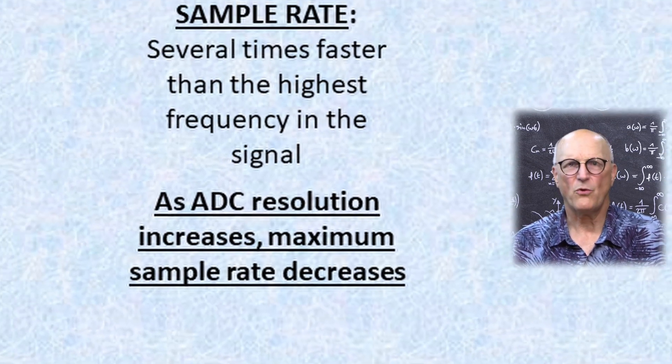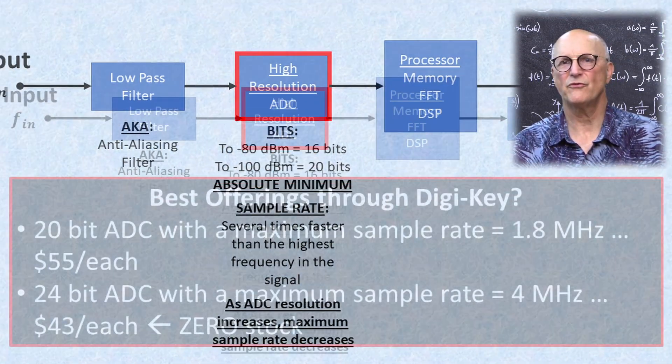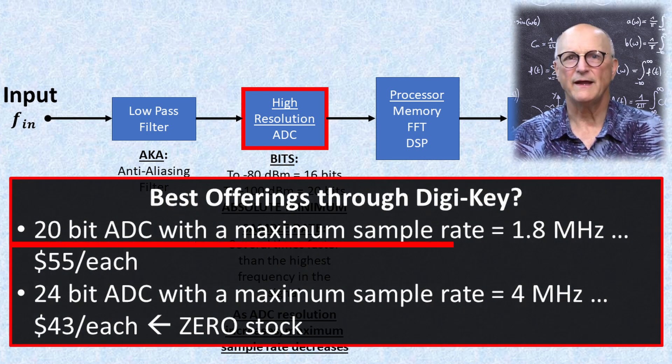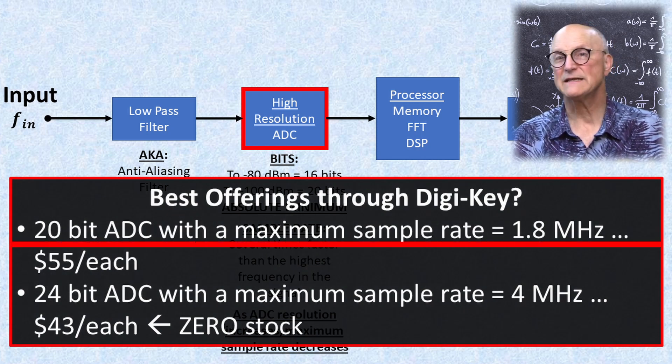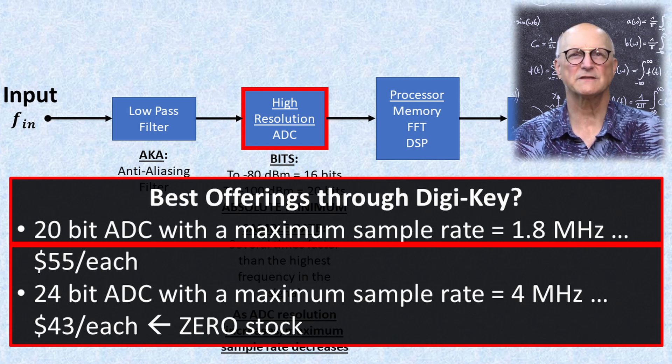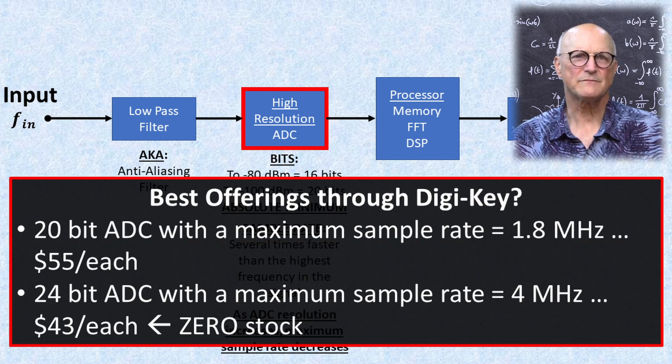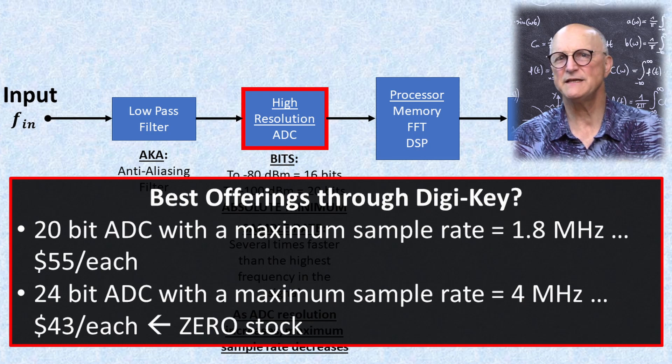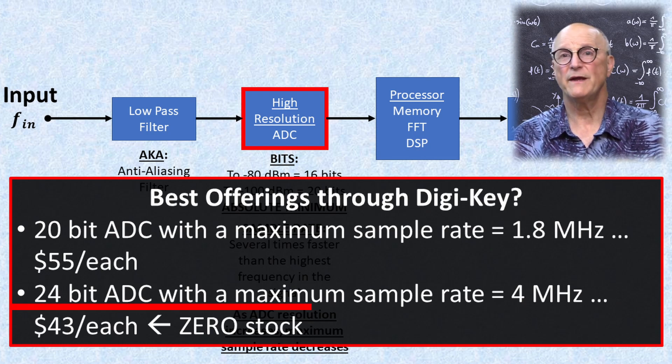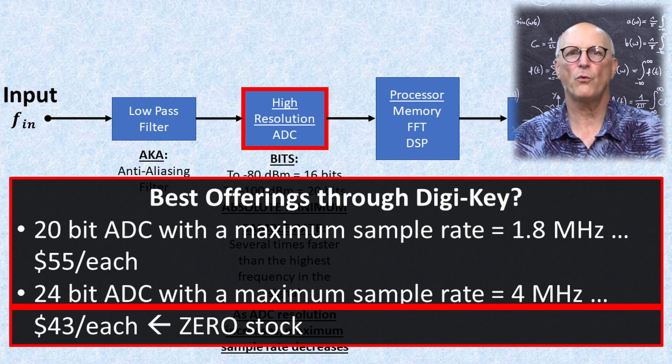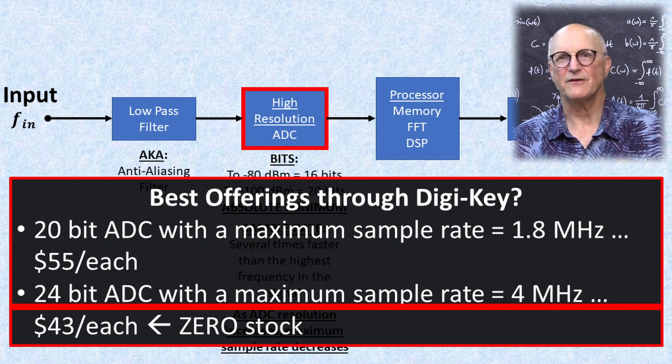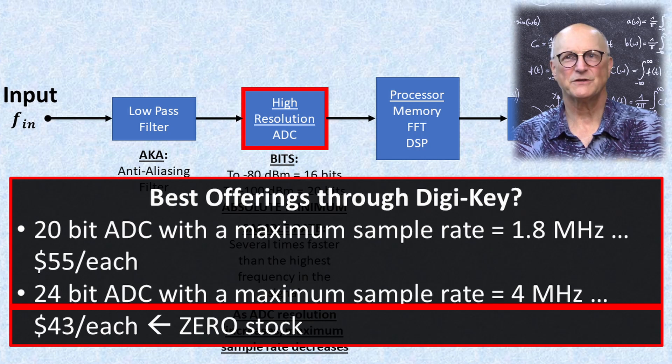Now I went out and did a quick perusal of what was available through DigiKey. They had a 20-bit ADC which has a maximum sampling rate of 1.8 MHz and they cost $55 a piece. They had stock of this one. Best case scenario for high-resolution ADCs was a 24-bit ADC with a maximum sampling rate of 4 MHz. They cost $43 a piece, but unfortunately, it looks like they're kind of made out of unobtainium. They had no stock right now.